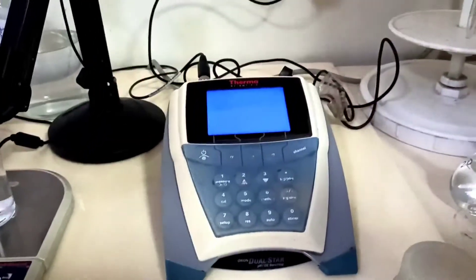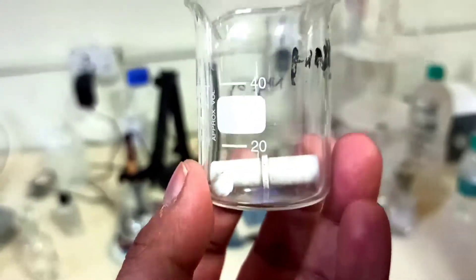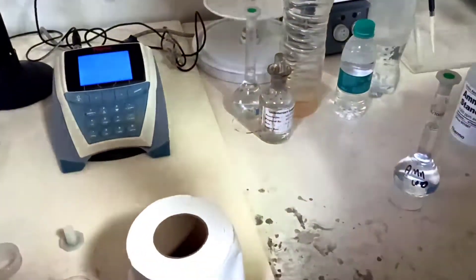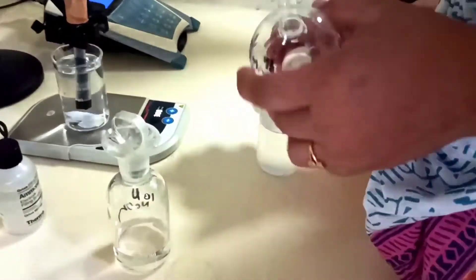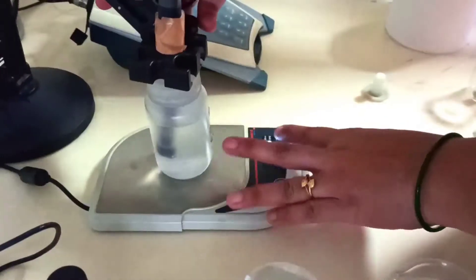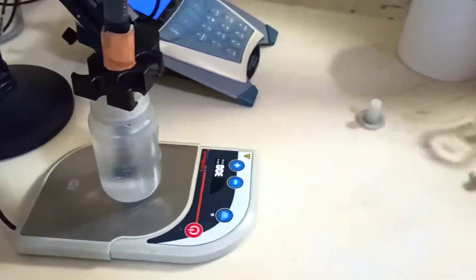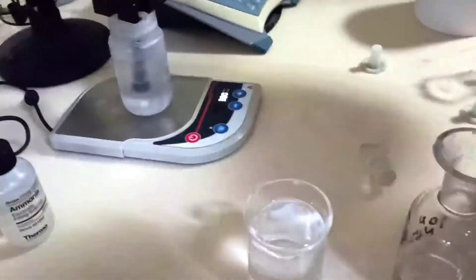We are using such type of magnets for magnetic stirring. Now we are ready for the second standard. We take our second standard, 10 ppm, and we add 1 ml buffer solution. Our buffer solution is 10 normal NaOH.